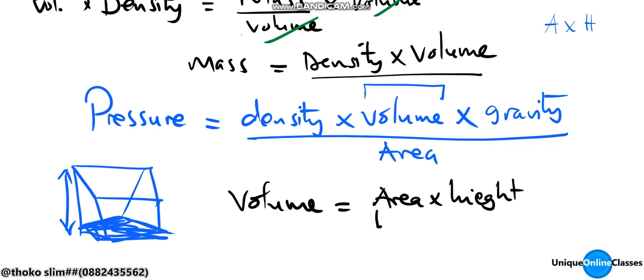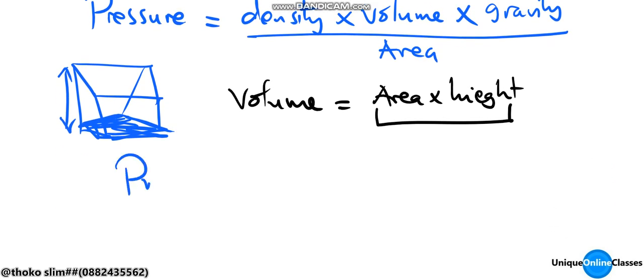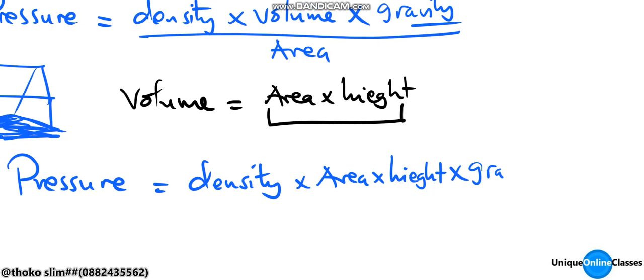So we can substitute volume with area times height. Pressure is equal to density times area times height times gravity, divided by area. Now we can see that we can cancel the area.